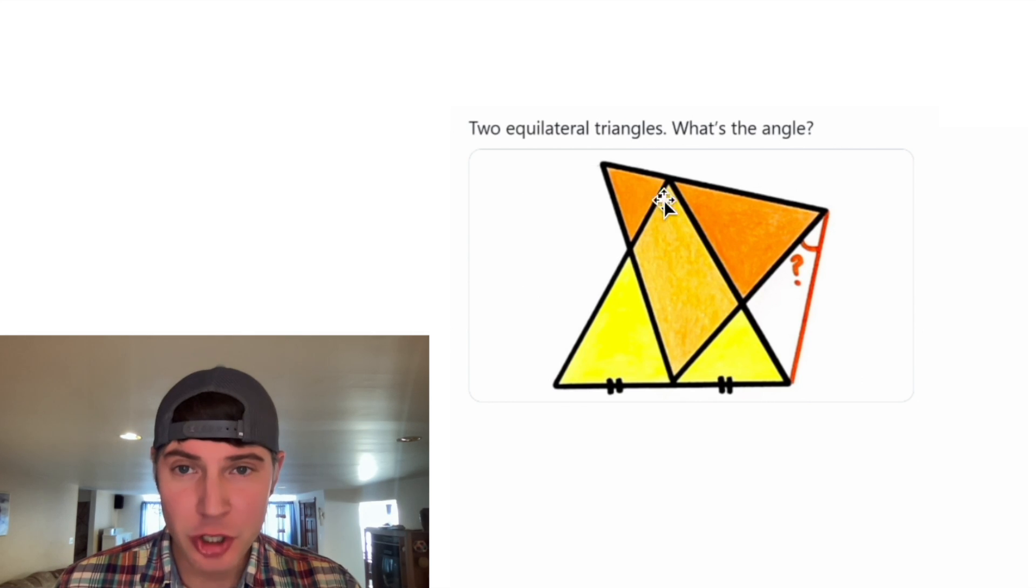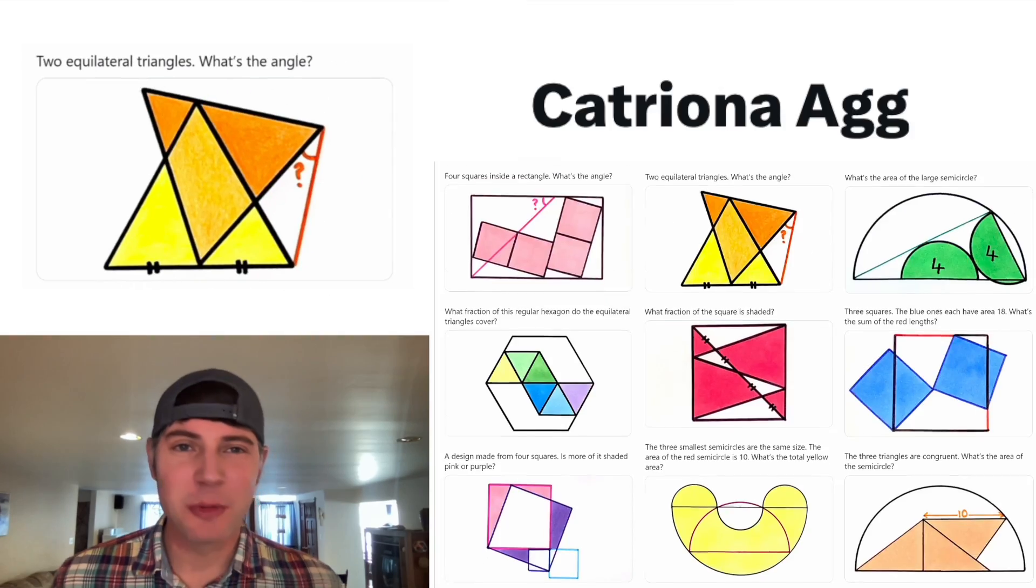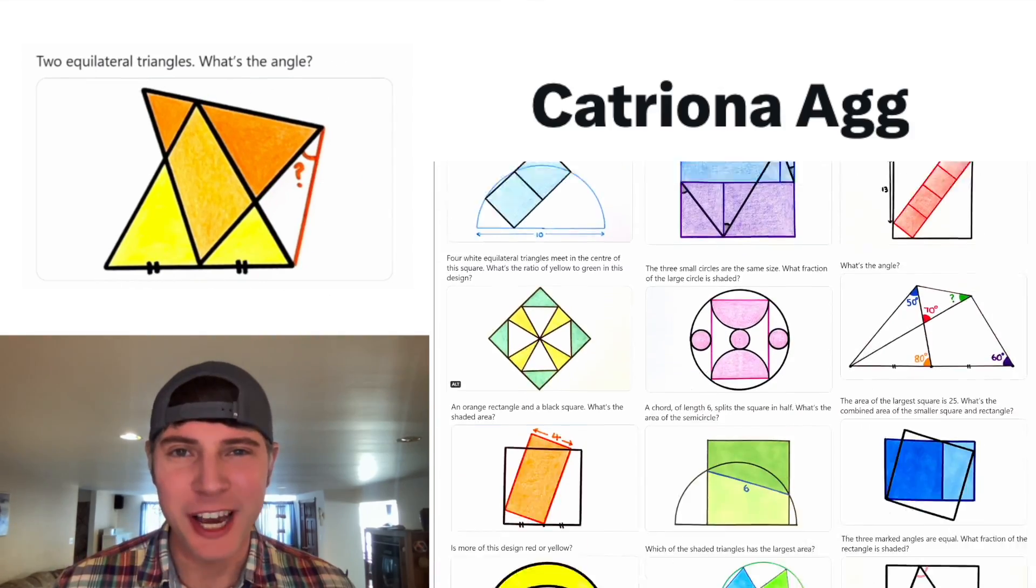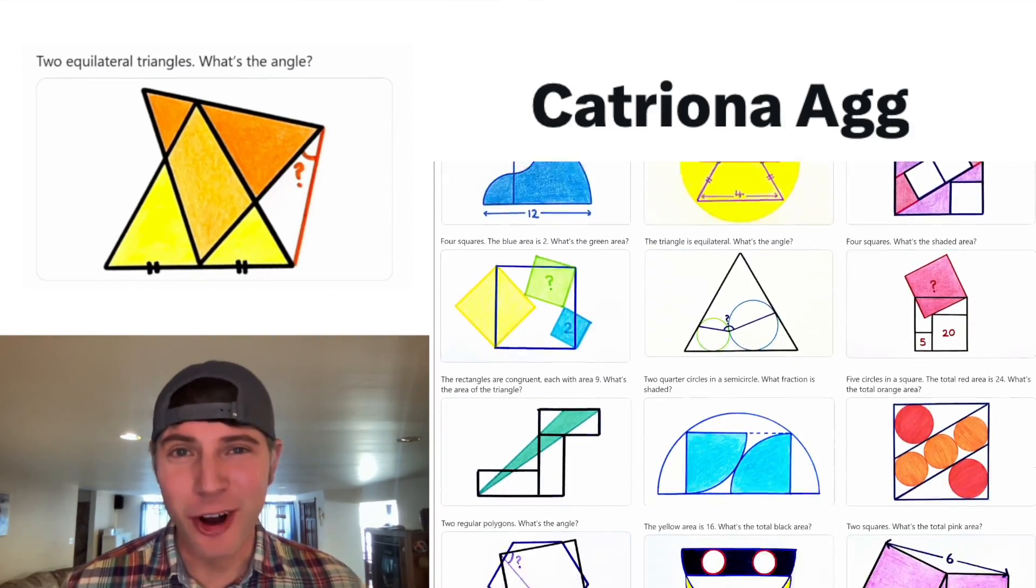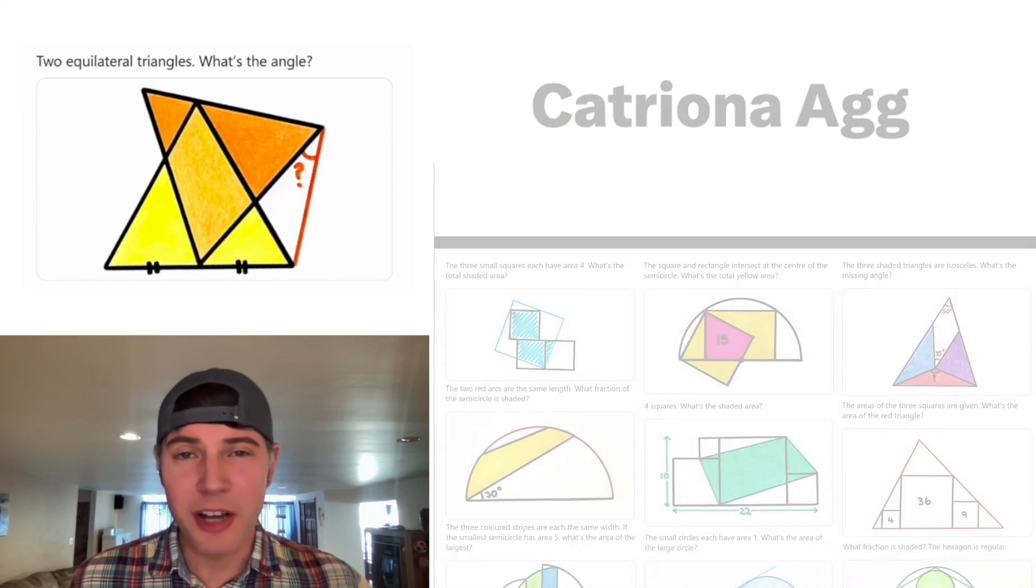Hey guys, this is a fun one. It says we have two equilateral triangles and it wants to know what is this angle. It's one of these puzzles created by Catriona Agg and it's my goal this year to try to solve all of these. If you want to try this on your own, pause it right now because I'm going to solve it in 3, 2, 1.